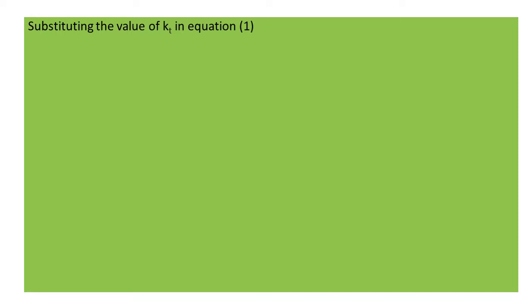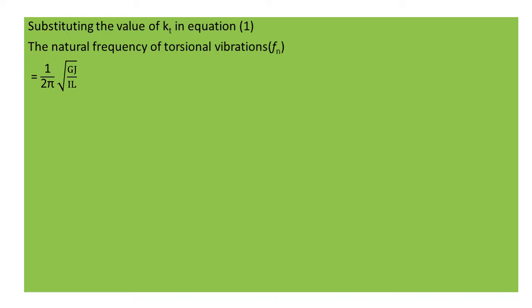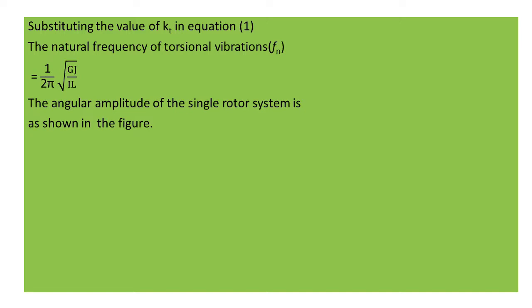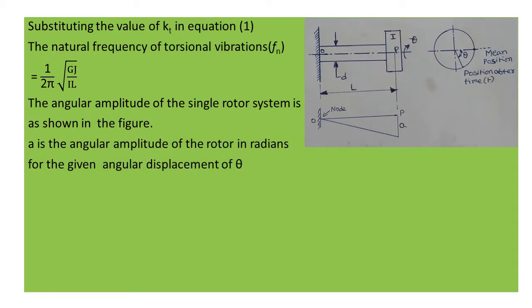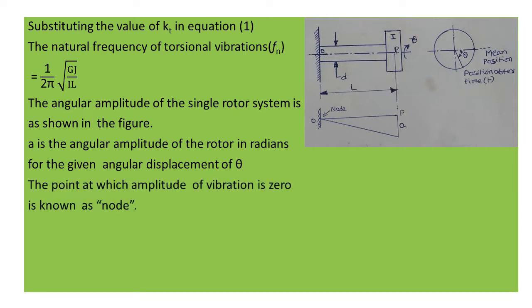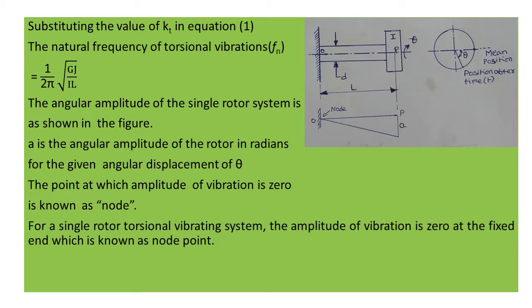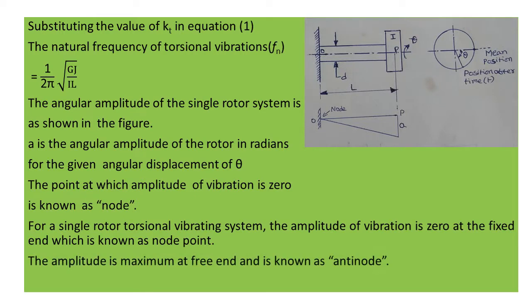Substituting the value of KT in Equation 1, the natural frequency of torsional vibrations: F_n = (1/2π)·√(GJ / I·L). The angular amplitude of the single rotor system is as shown in the figure. A is the angular amplitude of the rotor in radians. The point at which the amplitude of vibration is zero is known as a node. For a single rotor torsional vibrating system, the amplitude of vibration is zero at the fixed end — the node point — and maximum at the free end, known as the anti-node.